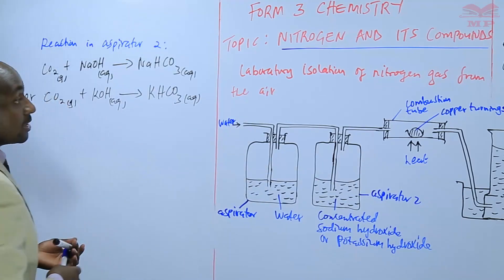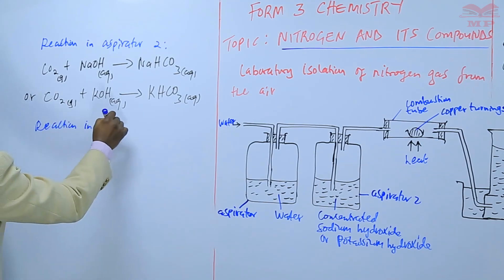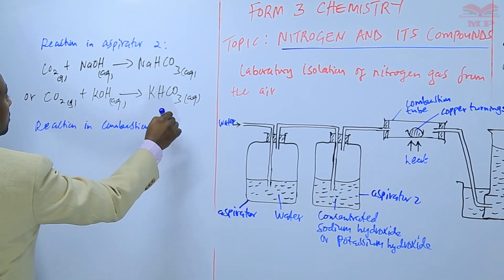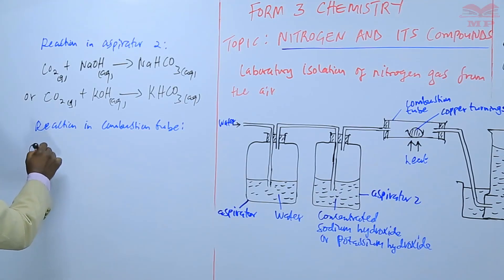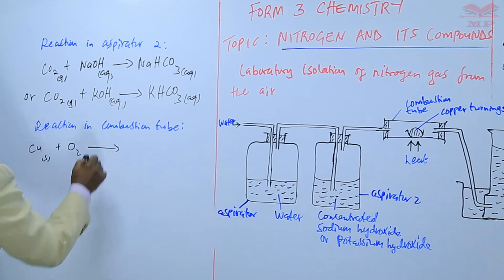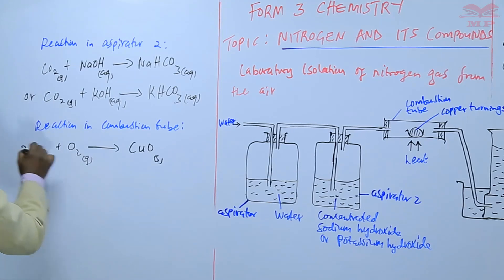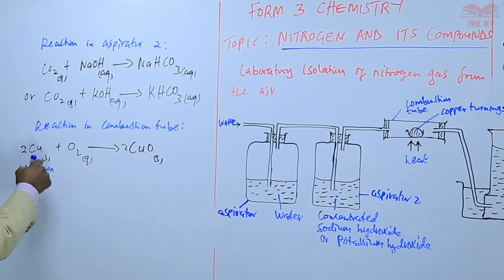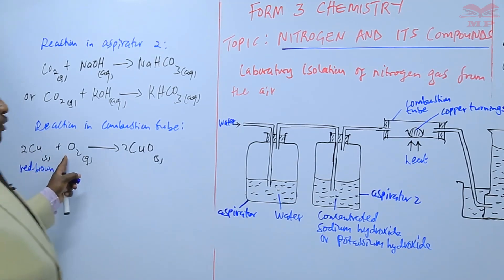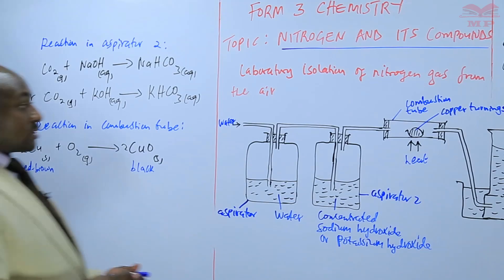The reaction in the combustion tube: oxygen is absorbed. The copper turnings combine with oxygen gas and we form copper(II) oxide, which is a solid. To balance the equation — you can be asked what observations are made. Initially the copper is red-brown, but after combining with oxygen we form a black solid which is copper(II) oxide. That is the observation that will be made here.